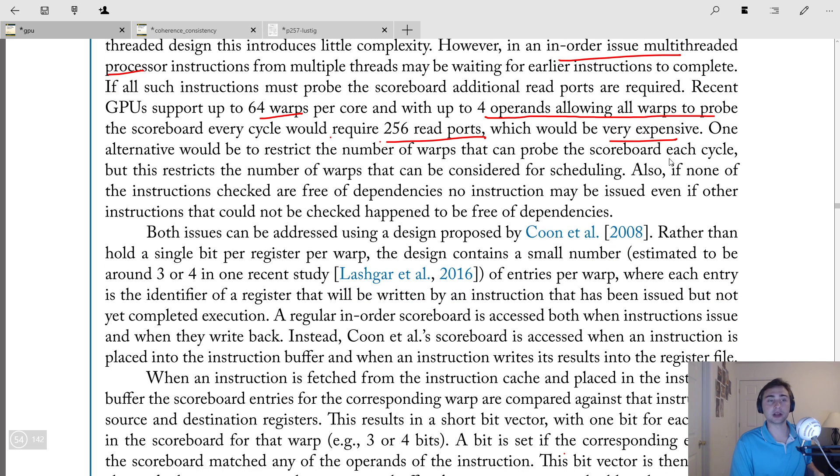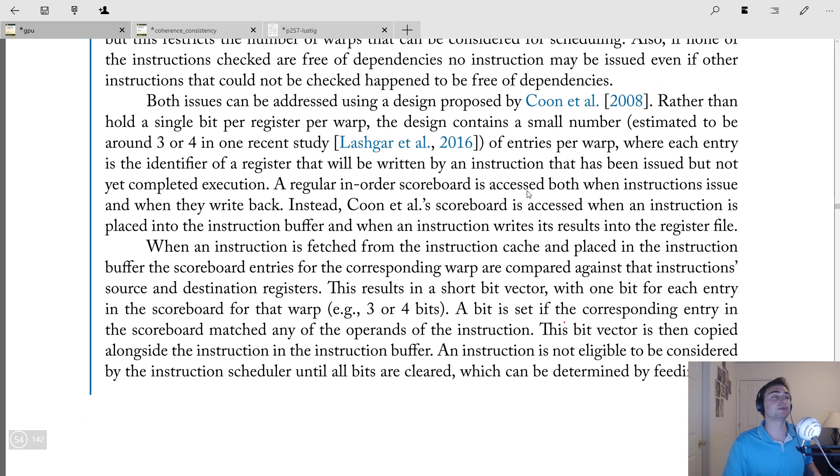So we don't want to do that. So we need to find a way around it. Now, one way that we could go around it and kind of the naive, simple way is just to restrict the number of warps that can be considered for scheduling. Now this itself has its own problem because our main benefit was having a massively multi-threaded system. And now in order to handle the massively multi-threaded system, we're saying you need to decrease the amount of parallelism you have. So it's kind of a circular problem that ends up creeping up quite a bit.